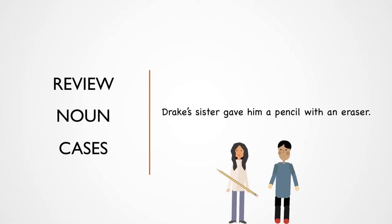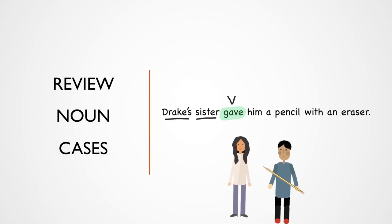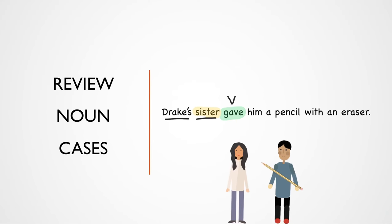First, let's do a little bit of review on how nouns work in English, and look at this example here. Drake's sister gave him a pencil with an eraser. Remember first, to find the subject, or nominative, we find the action, which in this case is gave. Then who is doing the action? Is it Drake's, or is it sister? Well, we can kind of see that sister is the one doing the action, not Drake's.